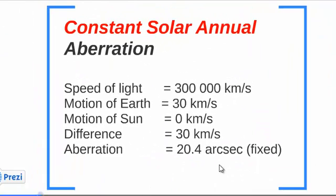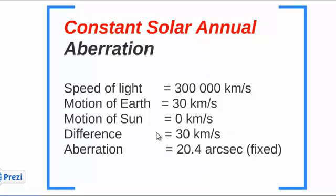For the solar aberration, the speed of light is 300,000, the Earth goes with 30, the Sun itself doesn't have a velocity, the difference is 30, and the resulting aberration term is 20.4 arc seconds.